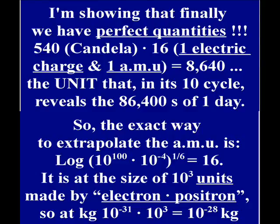And the result is a precise number. It is at the size of 10 rise to 3 units, made by the product between electron and positron. So, at the kilogram, 10 rise to 10 rise to minus 31 multiplied by 10 rise to 3 equals 10 rise to minus 28 kilograms.